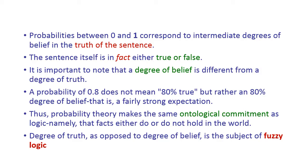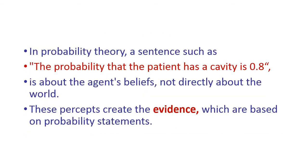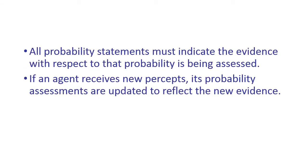Probability theory makes the same ontological commitment as logic — namely that facts either do or do not hold. The degree of truth, as opposed to degree of belief, is the subject of fuzzy logic. In probability theory, a sentence such as 'the probability that the patient has cavities is 0.8' is about the agent's belief, not directly about the world. These percepts create evidence which are based on probability statements, and all probability statements must indicate the evidence with respect to which the probability is being assessed. If an agent receives new percepts, its probability assessments are updated to reflect the new evidence.